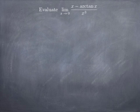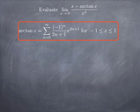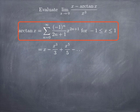For the second example, we evaluate the limit as x goes to 0 of (x minus arctan(x)) divided by x³. Again, plugging in x equals 0 gives arctan(0) = 0, so you get 0/0 — an indeterminate form. An alternative to L'Hôpital's rule is to use the power series representation for arctan(x), looking at just the first few terms: x minus x³/3 plus x⁵/5 minus x⁷/7 and so on.